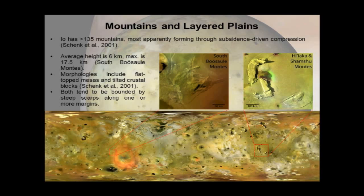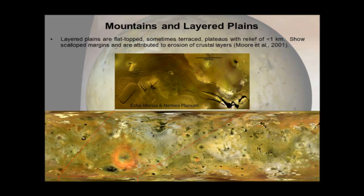Most of IO is fairly flat, but it has more than 135 mountains, several kilometres high — with the highest reaching about 18 kilometres. Current thinking is these form through subsidence-driven compression as plume deposits build up over time. They have two distinct morphologies: flat-topped mesas and tilted crustal blocks, often bounded by steep scarps. The other positive relief features are layered plains — flat-topped plateaus of several hundred metres relief, with scalloped margins attributed to erosion of crustal layers.